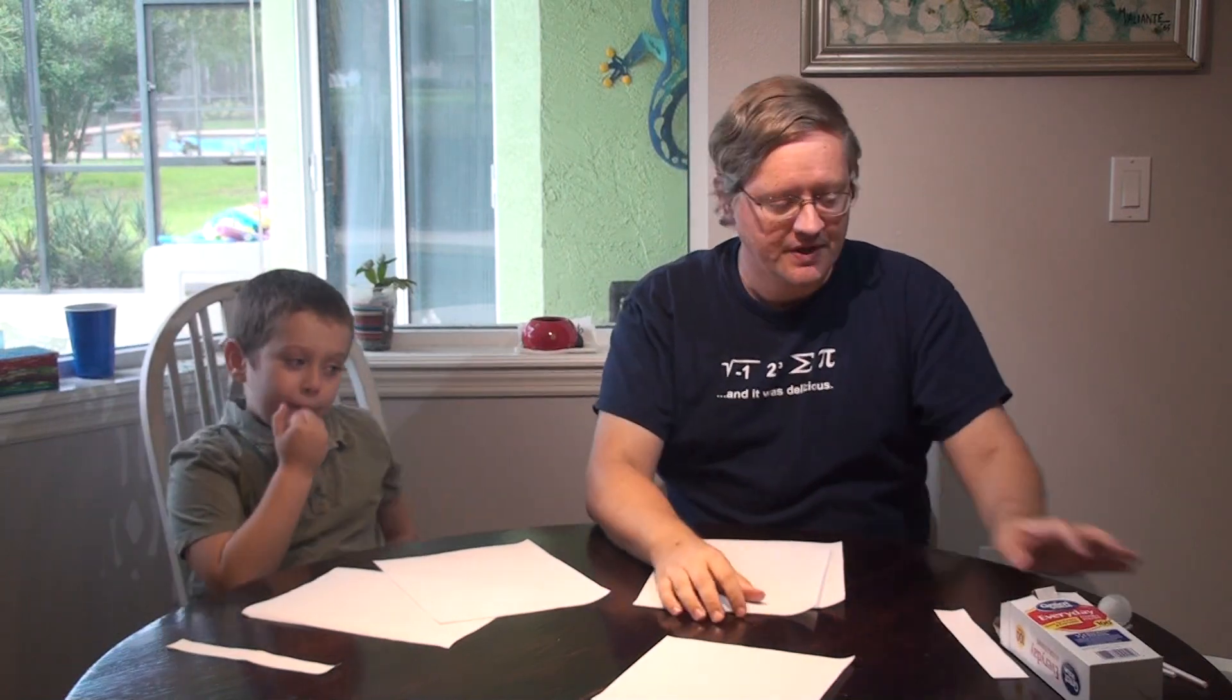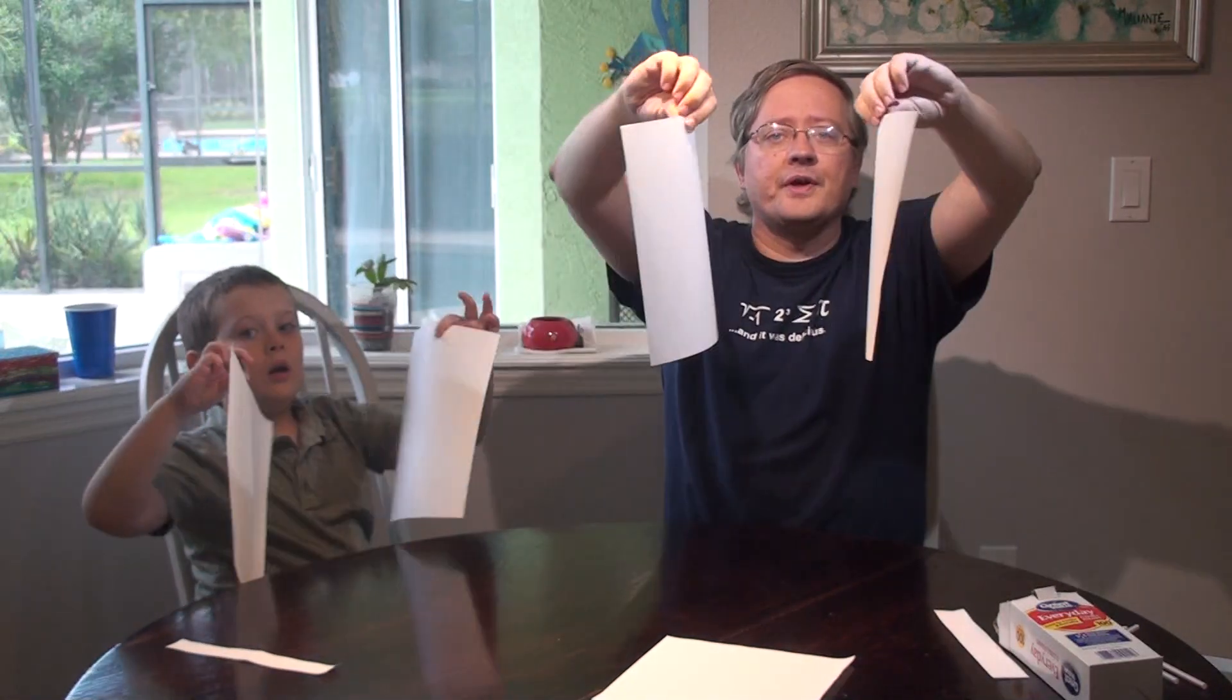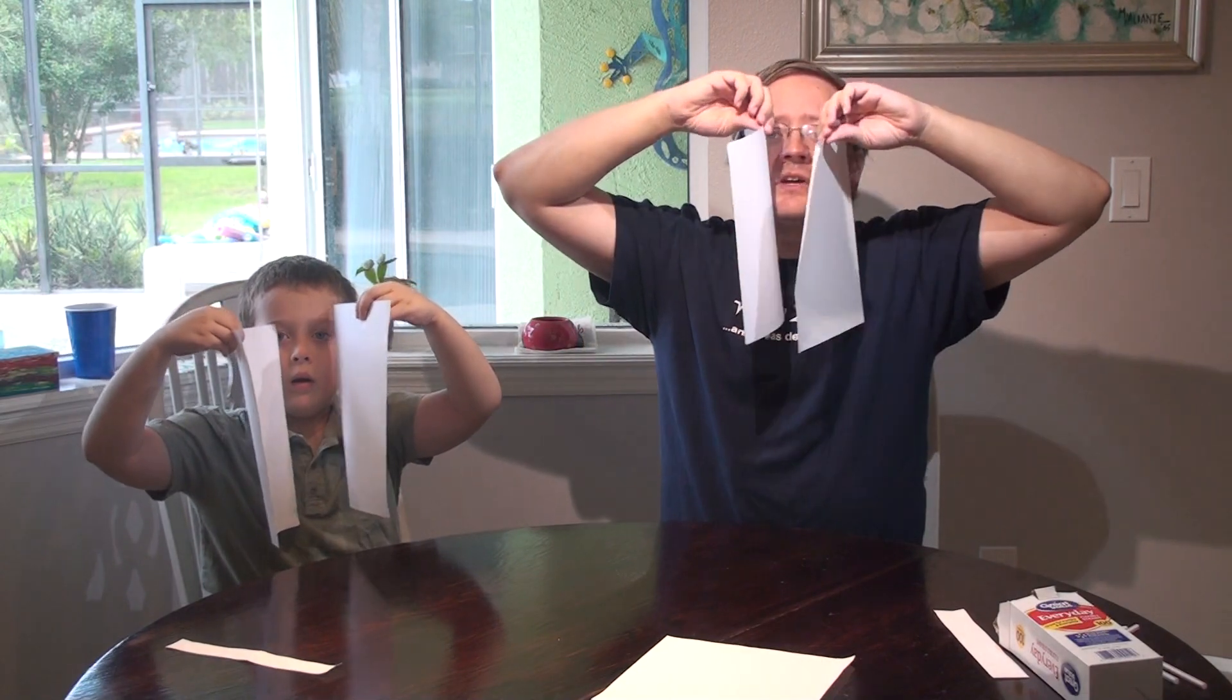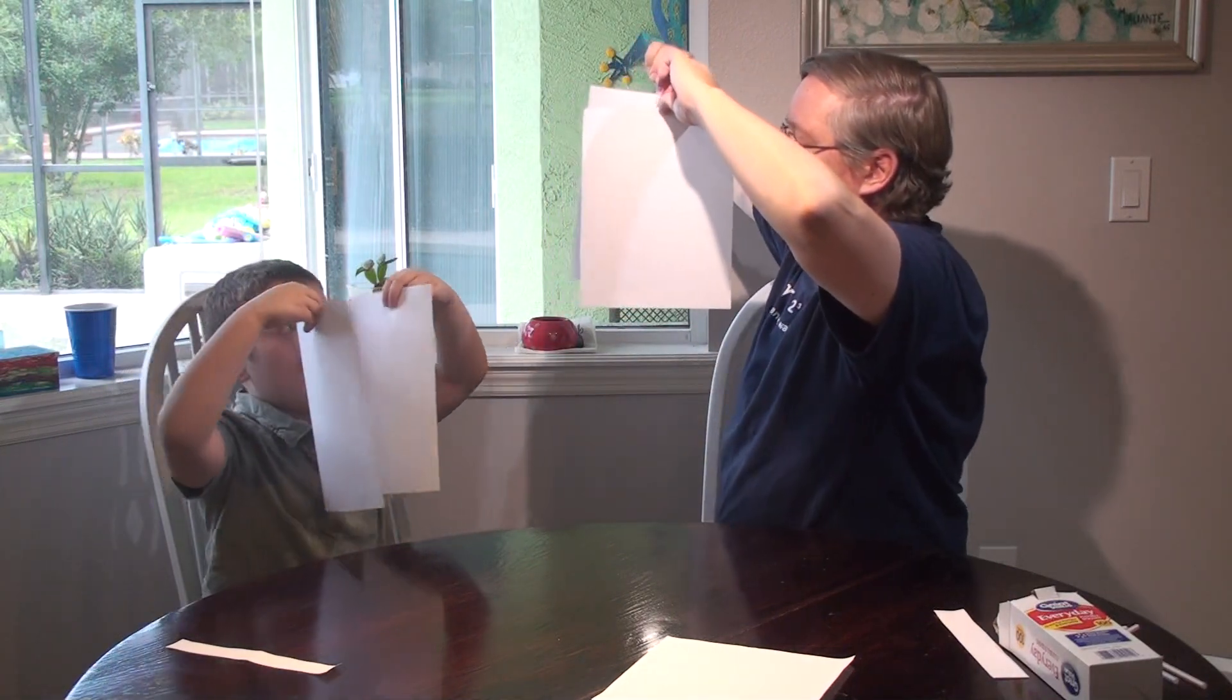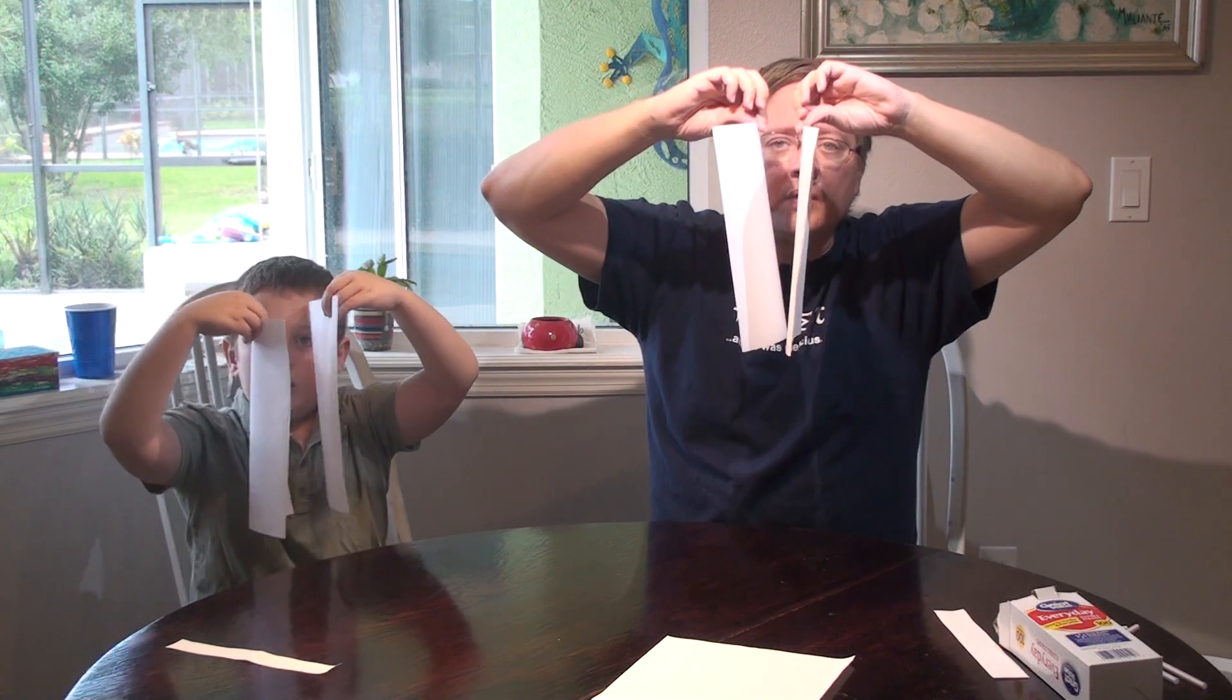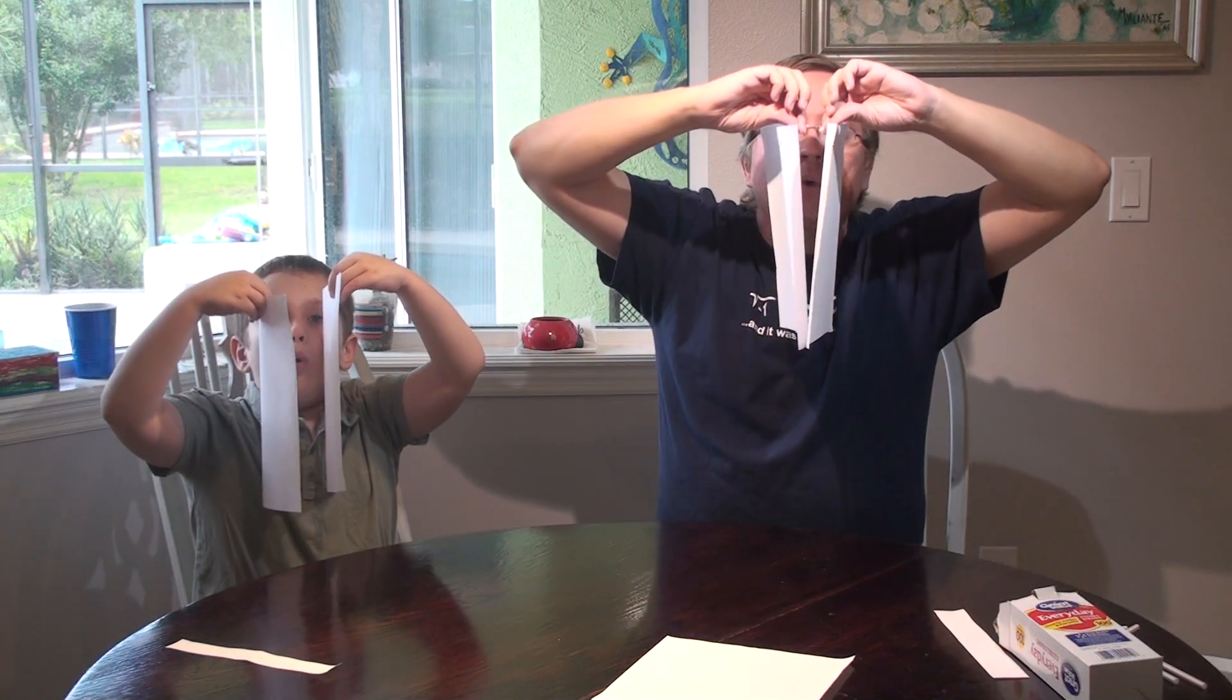So the second one we're going to do is we're going to take two pieces of paper like this, and I'm going to hold them so that they're kind of together like this in front of me. I'm going to hold the papers in front of me, and what I'm going to do is I'm going to blow in between the two pieces of paper.